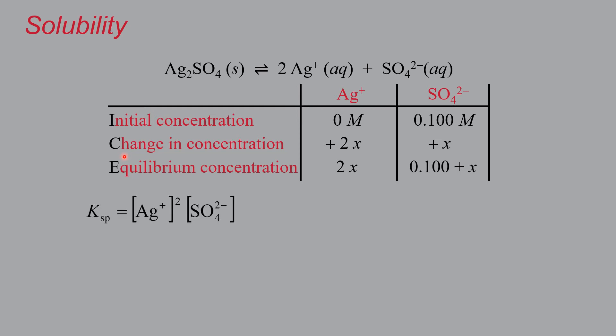So what does this expression look like now? So Ksp is still silver concentration squared times sulfate. So that's going to be 2X squared times the quantity 0.1 plus X. And we can probably make an assumption here that this 0.1 plus X is pretty close to just 0.1. Again, not much of it dissolved. It's not going to change its value by more than 5%, which makes the algebra quite a bit easier.